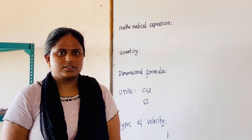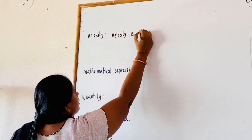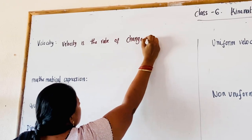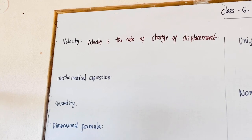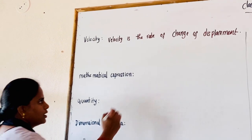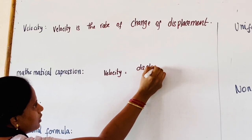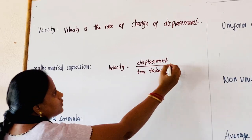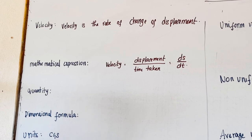Similar to speed, velocity is the rate of change of displacement. The mathematical expression for velocity is: velocity equals displacement divided by time. It is a vector quantity — it has both magnitude and direction.